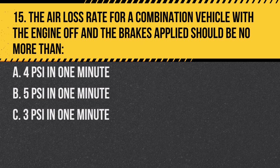Question 15. The air loss rate for a combination vehicle, with the engine off and the brakes applied, should be no more than: A. Four psi in one minute. B. Five psi in one minute. C. Three psi in one minute. Answer A. Four psi in one minute. Combination vehicles have a slightly higher allowable air loss rate.